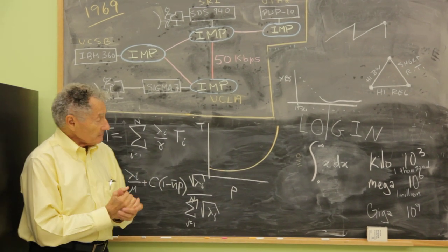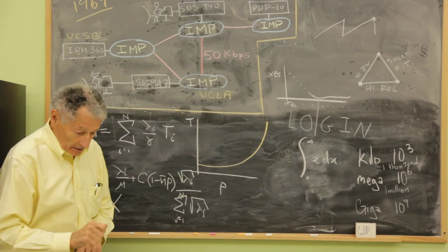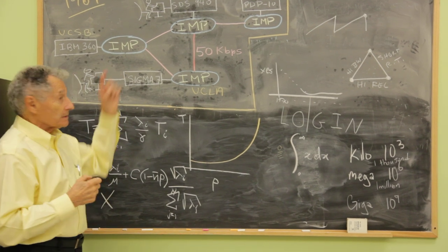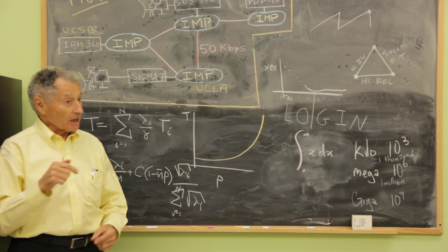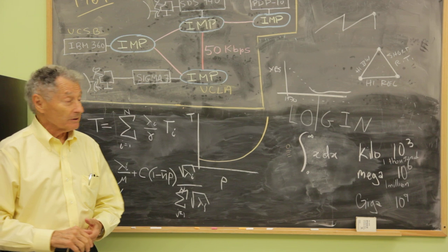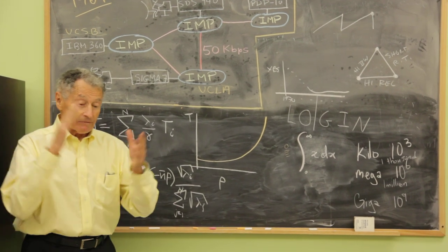Okay, we're ready to go. So Charlie typed the L, and he said, you get the L? And Bill said, yep, got the L. Charlie typed the O, you get the O? Yep, got the O. Charlie typed the G, you get the G? Crash!